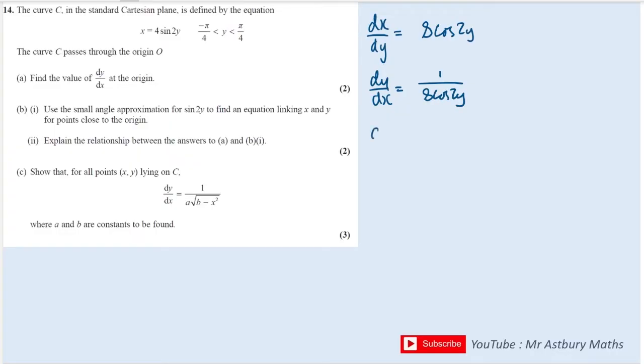And at the origin, dy by dx, the y value is equal to 0 at the origin, so I just sub in 0 and I get 1 over 8 and cos of 0 is 1, so it's just 1 over 8. So that's part A done.